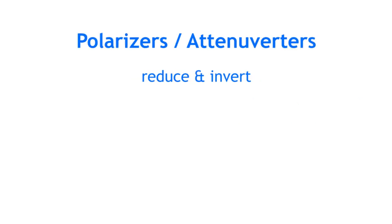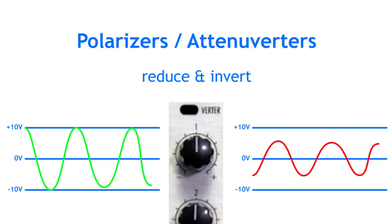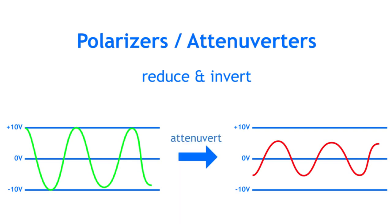Polarizers or attenuverters are like attenuators that can also invert the incoming signal. They usually feature one knob that goes from positive to zero in the middle to negative, allowing you to smoothly blend from the positive signal to a negative version.